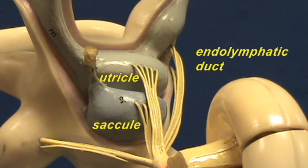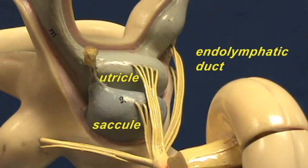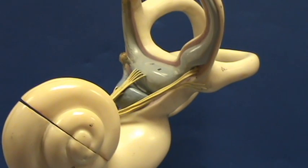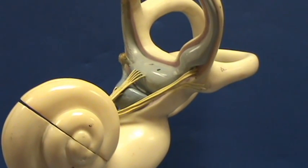The endolymphatic duct would end in a dilation called the endolymphatic sac, which you would find in the subdural space. In this location, the excess endolymphatic fluid is returned to the general circulation.